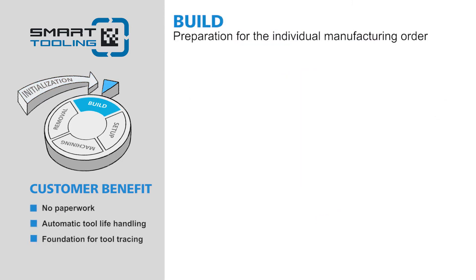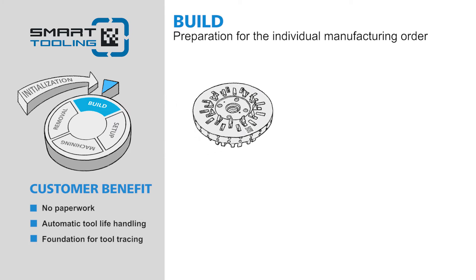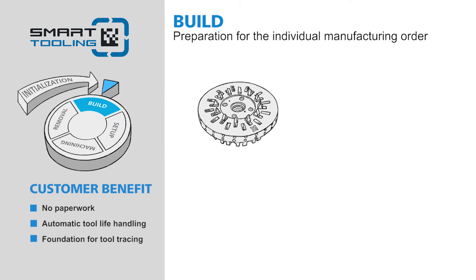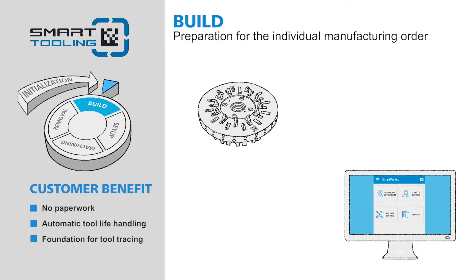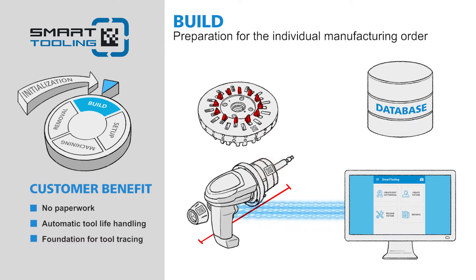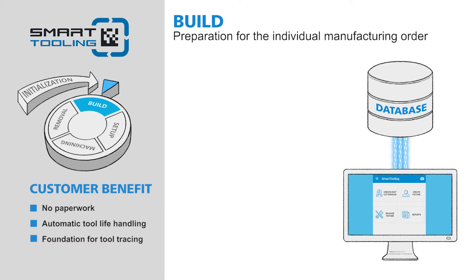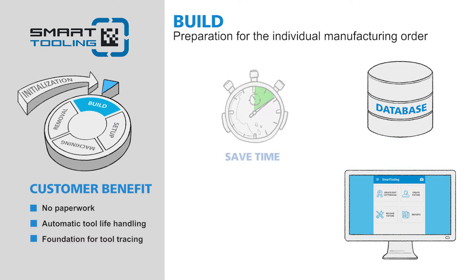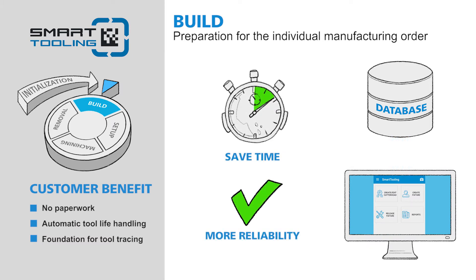Build — preparation for the individual manufacturing order. During the preparation stage, you set up the cutter head for the production order. With the aid of the Smart Tooling app, you can save the relevant settings for the tool and the fixture for the cutting process in the database. Support from the software during preparation will save you time and also give you more process reliability, since manual input or handwritten control slips are replaced by the digital twin.